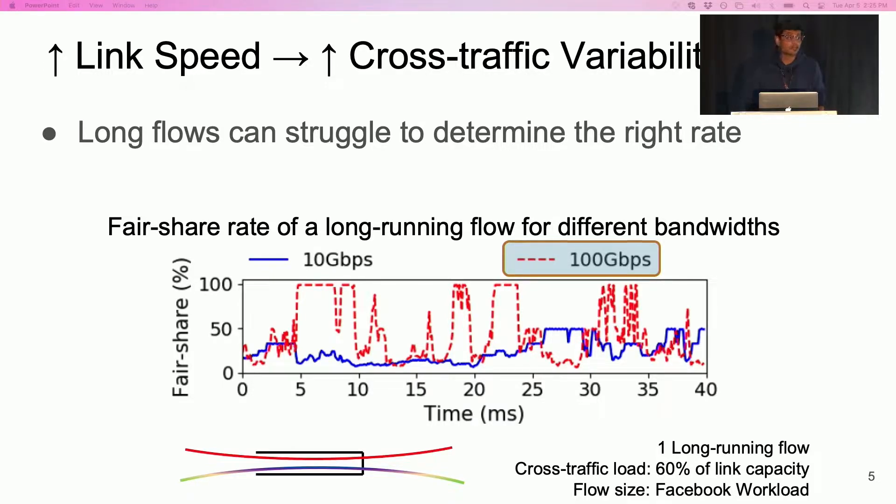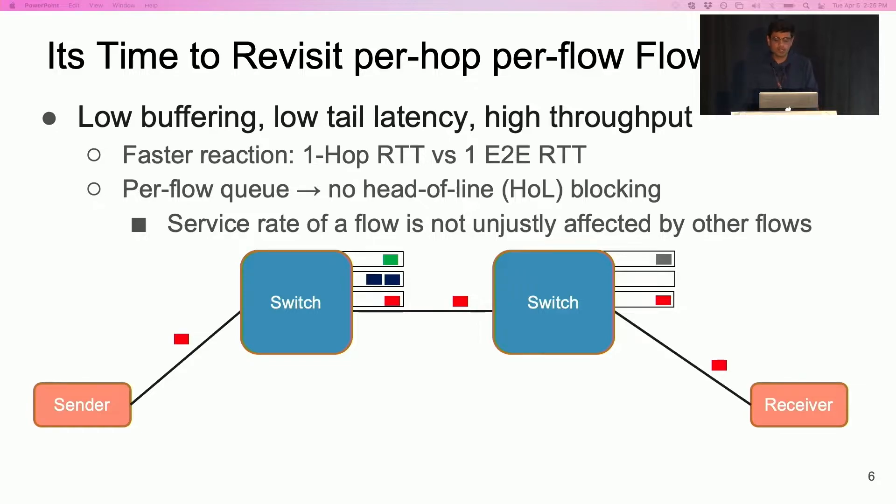Now, one might ask, given all these limitations, is there even a way to improve performance? In BFC, we revisit the idea of per hop per flow congestion control. Per hop per flow control simply responds to congestion faster.